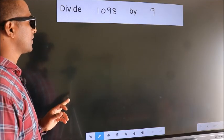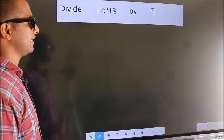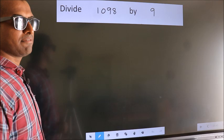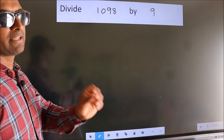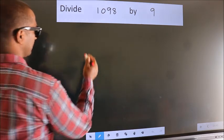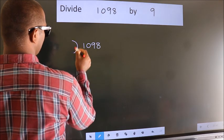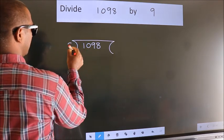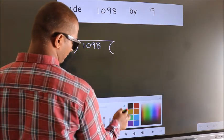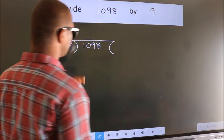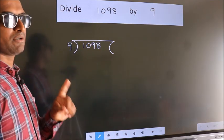Divide 1098 by 9. To do this division, we should frame it in this way. 1098 here, 9 here. This is your step 1.